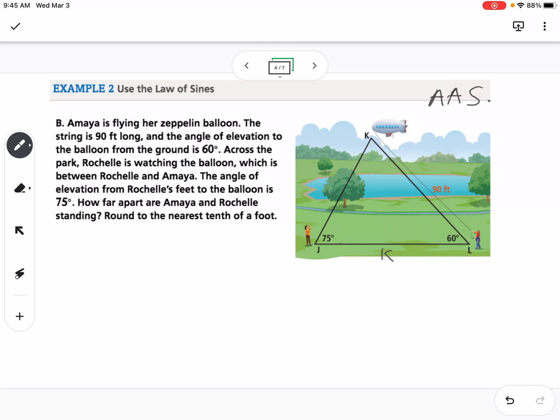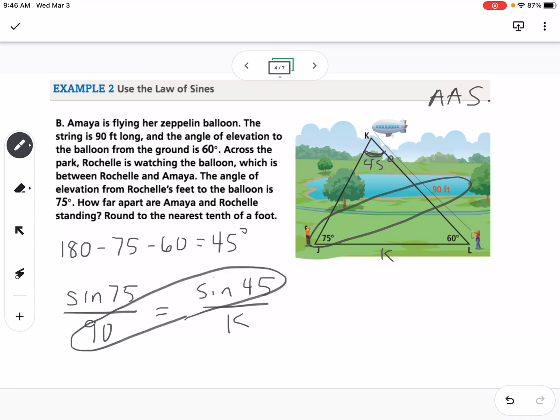Okay, so in order to find side k, we need angle k. And that's possible to find because we know a triangle adds up to 180. So we can take 180 minus 75 minus 60 to get what angle k is, which is 45 degrees. So this is 45 degrees. So then I can set up my law of sines. So I can say sine, I'm going to use the side and angle that I know. So sine of 75 over 90 is equal to sine of 45 over k. So we're going to cross multiply. So we're going to take 90 times sine of 45 divided by sine of 75. And on this one, we don't have to do the inverse because we're just solving for a side. It doesn't look like a k. Let's try that again. Okay, so when I solve this, I get 65.9 feet.